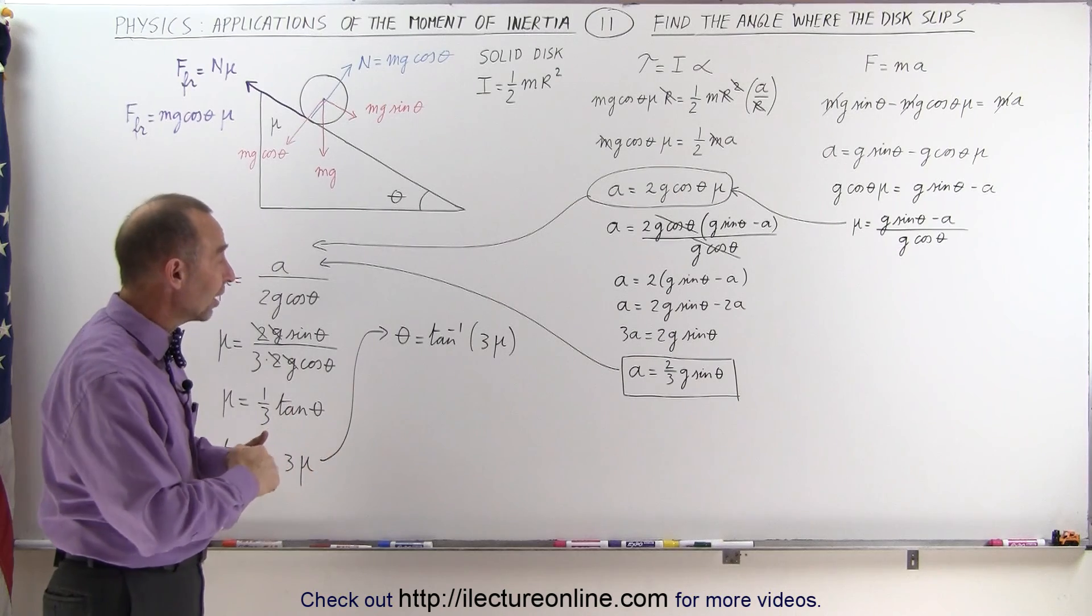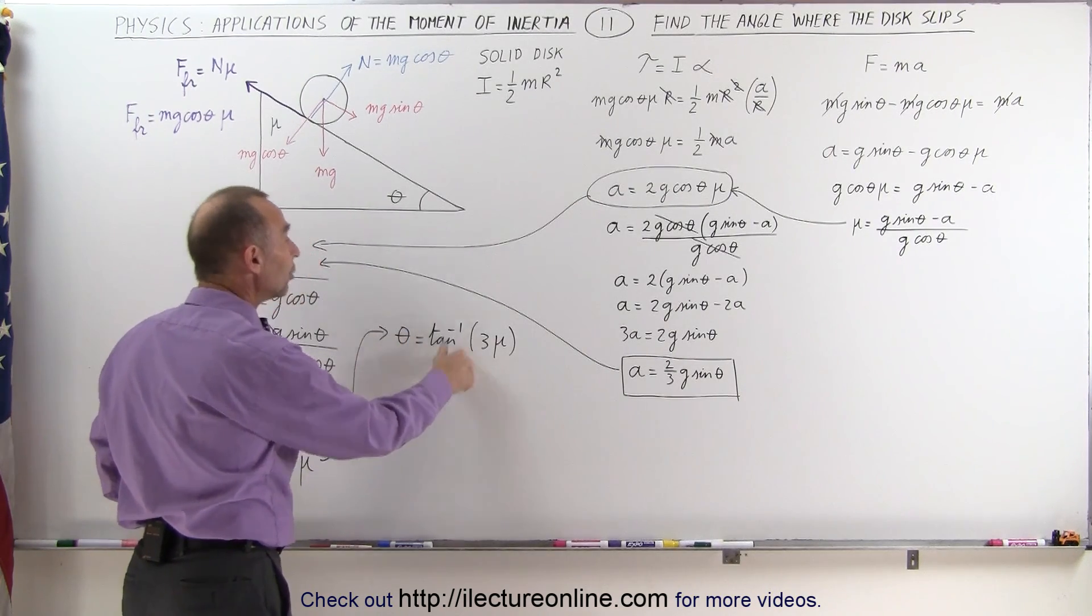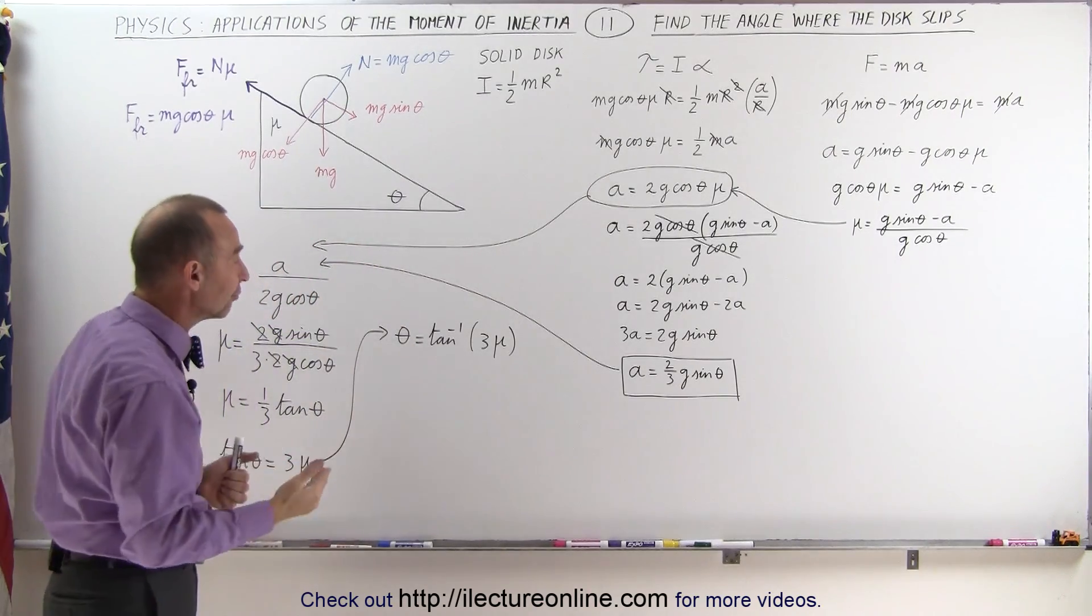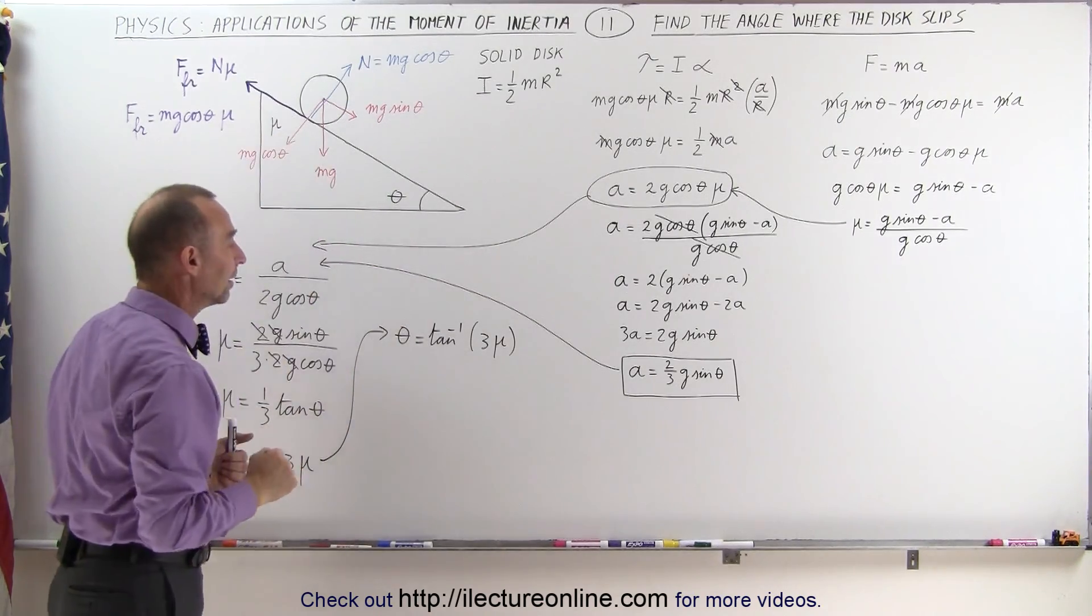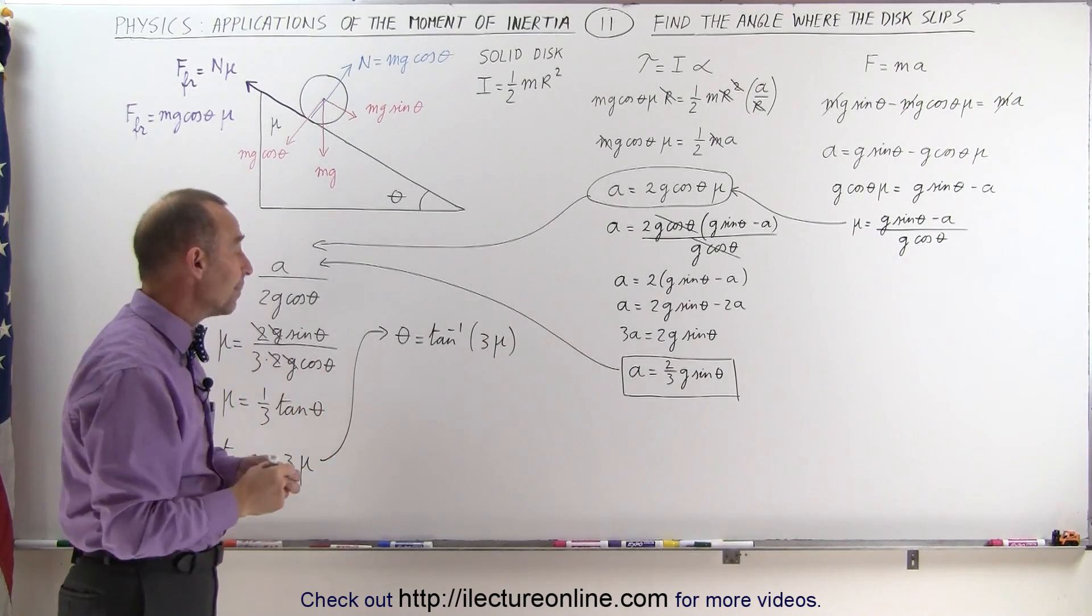Or what this equation is telling us is that if theta becomes larger than this, we can no longer have an acceleration. Then it exceeds the maximum friction force this can provide. And so now all we have to do is plug in various values for mu to see what the angle would be.